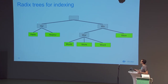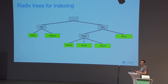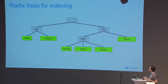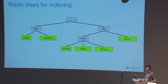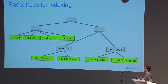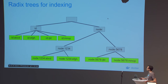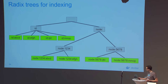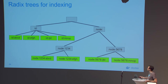In SwarmKit with actual data, instead of storing words we store objects like tasks and nodes. We can build multiple indices on top of this tree by prefixing keys with the type of index. The first index is tasks by ID — the key is just 'ID' and then the task ID. Since all keys start with ID, they're grouped in a common place in the tree.